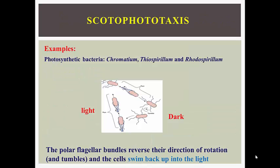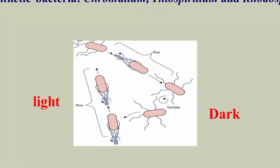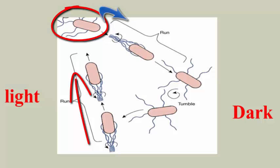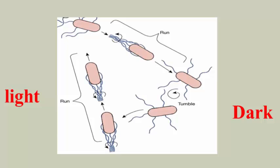Scotophototaxis is movement away from darkness. Photosynthetic bacteria such as Chromatium, Thiospirillum, and Rhodospirillum are capable of scotophototaxis. This phenomenon is observed under the microscope — once a bacterium moves outside the illuminated area, it reverses direction and re-enters the light. Scotophototaxis is not considered true phototaxis since the cells do not follow a gradient of light; such movement is due to avoidance of darkness rather than movement along a light gradient.